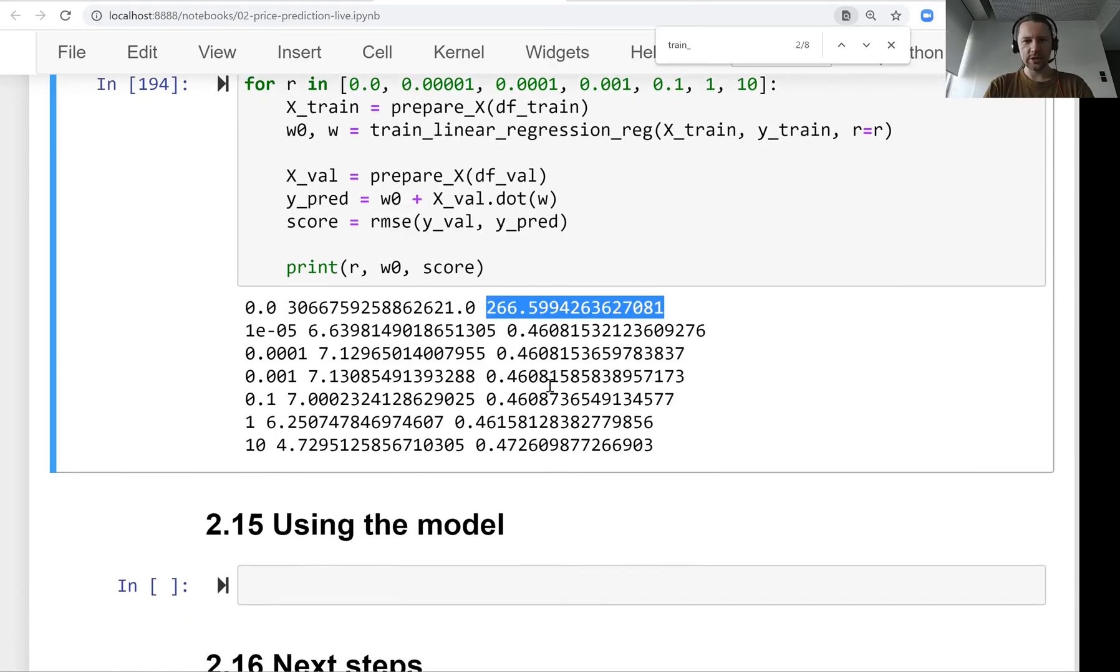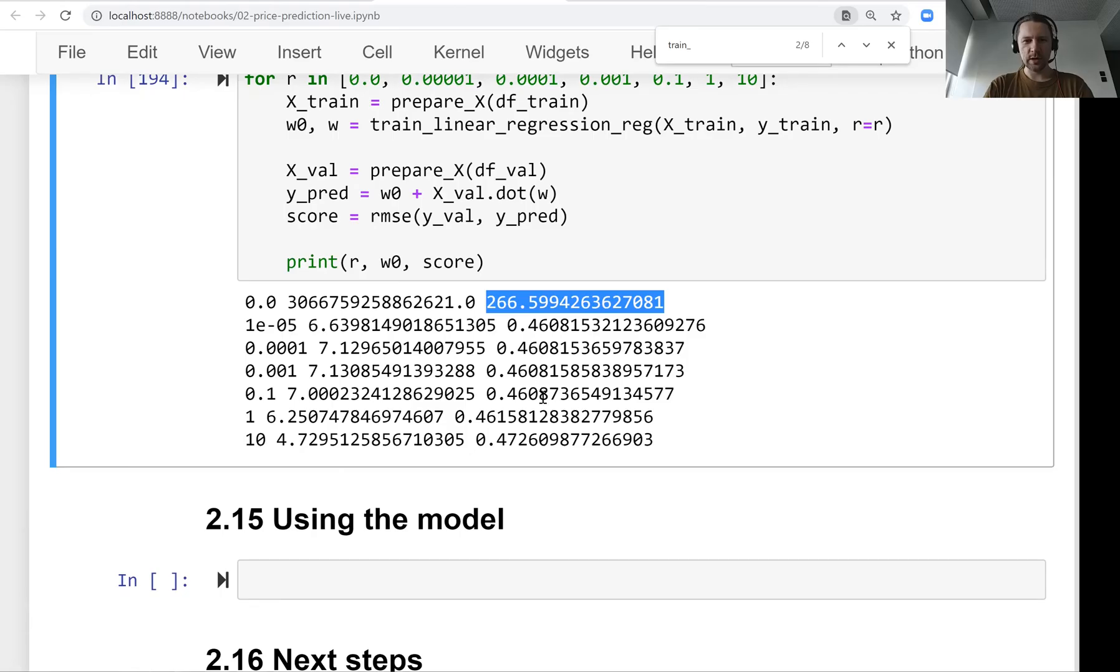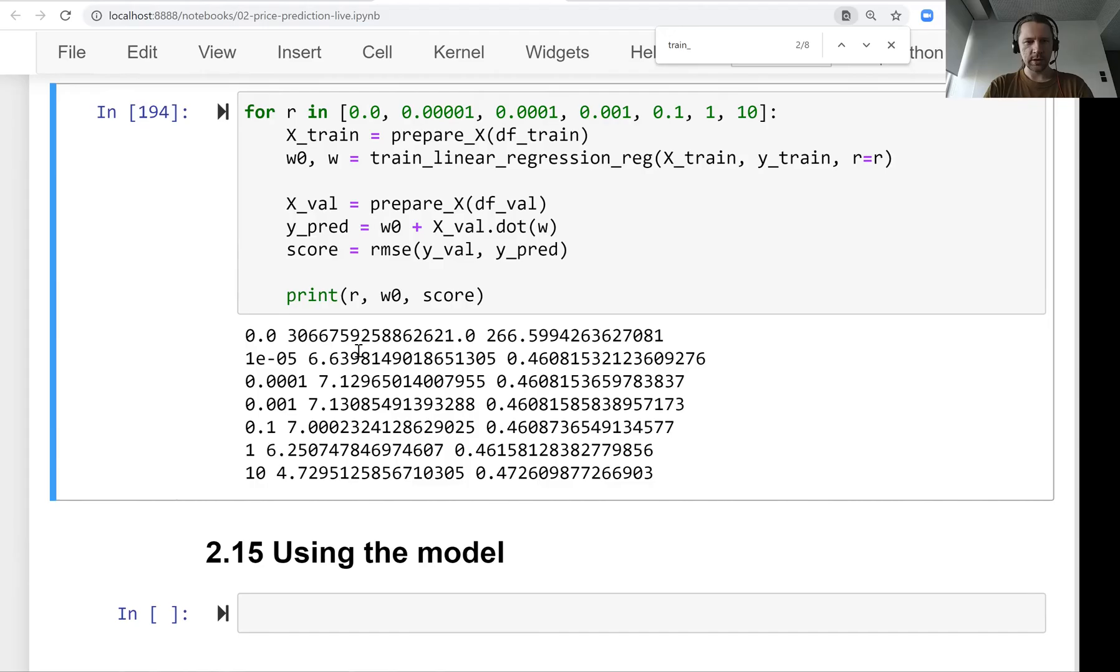So the score doesn't really change that much, it starts to become a bit worse as we increase the regularization. When it's 10 it's even worse. The bias term also, the more regularization we add the smaller the bias term is.